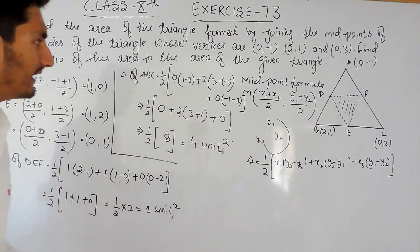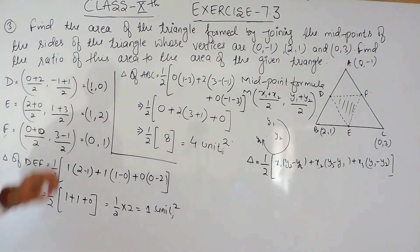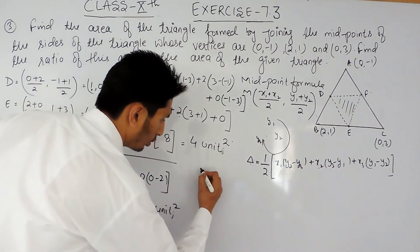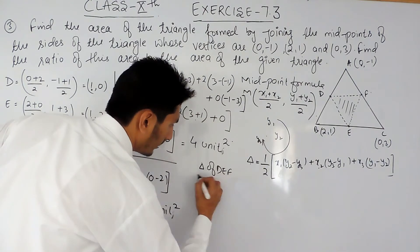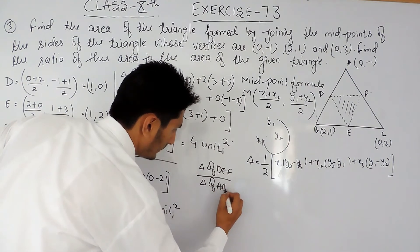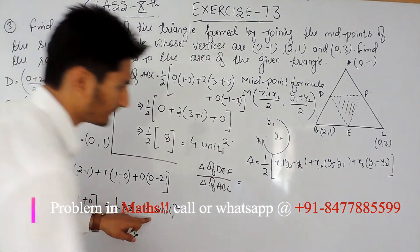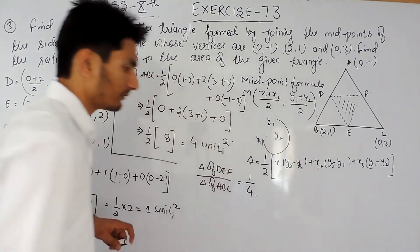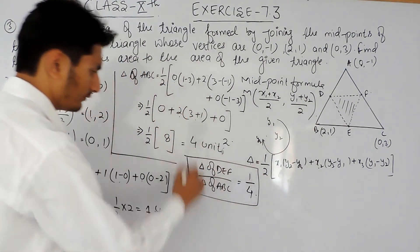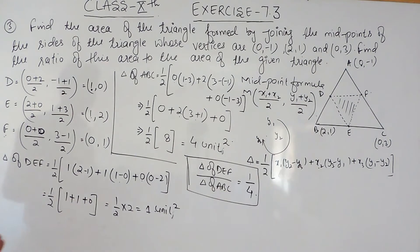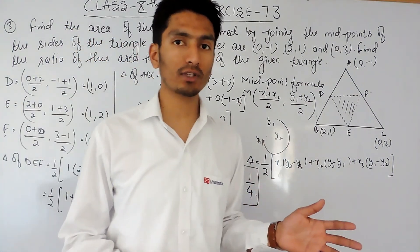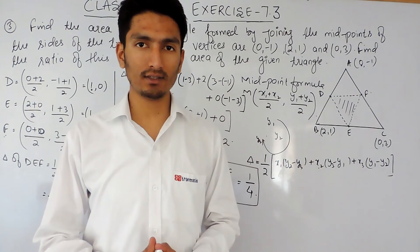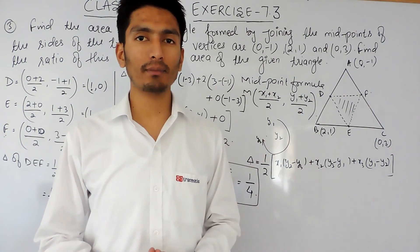So the area of triangle ABC is 4 square units. Now the ratio of area of DEF to area of ABC is 1 : 4. This is how you can solve this question. If you liked this video, please subscribe to our channel. For any problems in maths, you can contact us — the phone number, email address, and WhatsApp number are given in the description below. Thank you.